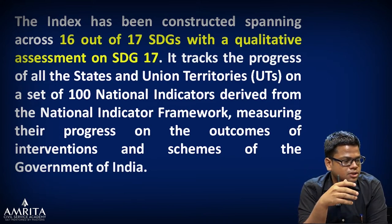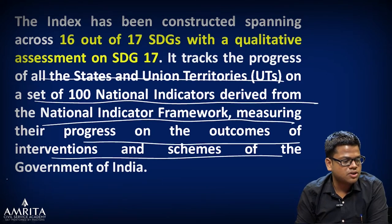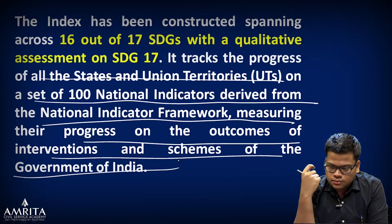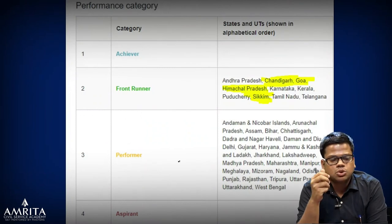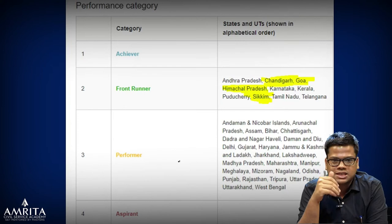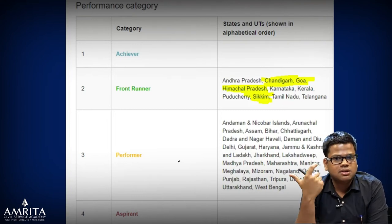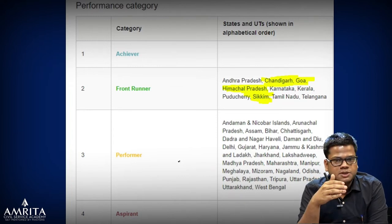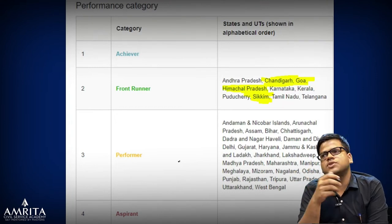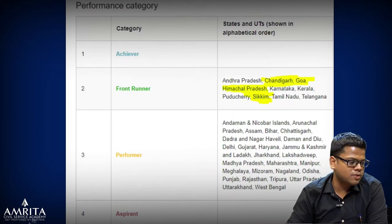The SDG India Index tracks the progress of all states and union territories on a set of 100 national indicators derived from the national indicator framework, measuring progress on outcomes of government of India schemes. All states are divided into four categories: Achievers, Front Runners, Performers, and Aspirants. Aspirants are at the lowest level but the terminology reflects a change of attitude — that they have aspiration to improve. There is no state in the Achiever category yet.